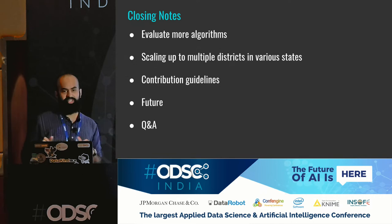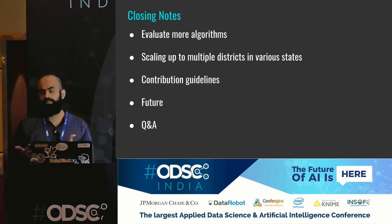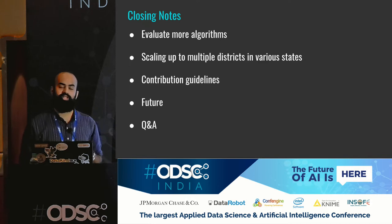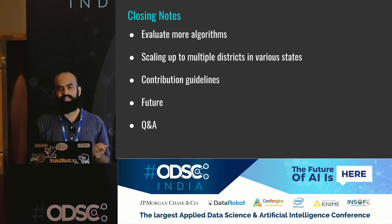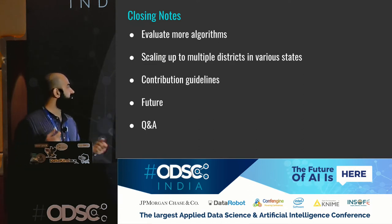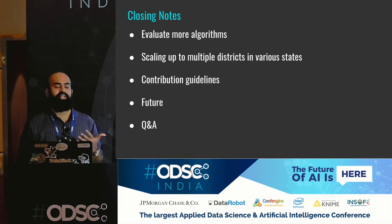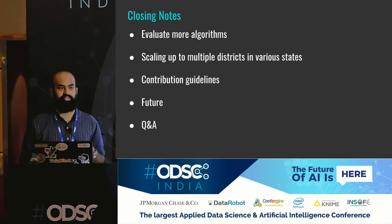Closing notes: we would try to evaluate more algorithms — things like exponential smoothing, double exponential smoothing, triple exponential smoothing — to see if we can get more accurate anomalies to share with the government. We would try to scale up to multiple districts; currently focusing on five districts in five states of India. We'd try to cover all districts in those five states where we get this time series data, make everything open source and openly available, set up contribution guidelines, and eventually work toward more data-driven governance.